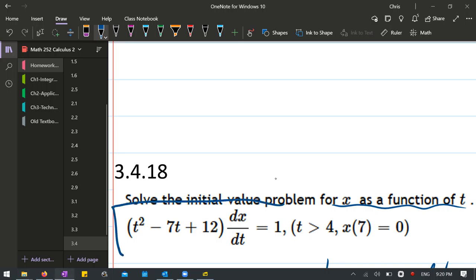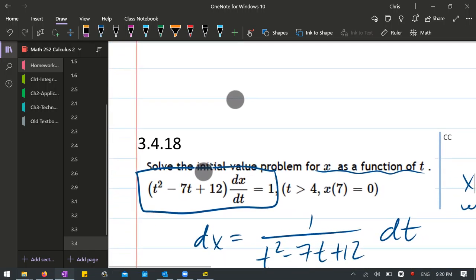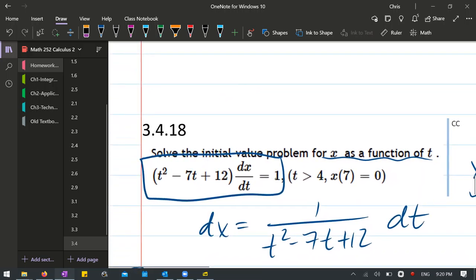Based on the x being in the numerator, we're gonna move the t's to the right side. The way we're gonna move dt is we're gonna multiply by dt and the way we're gonna move this is we're gonna divide by it and that's where the partial fractions come in. So we multiply by the dt on the right and divide by t squared minus 7t plus 12.